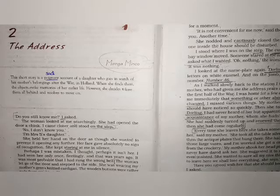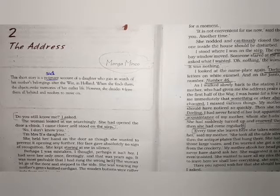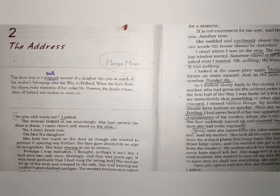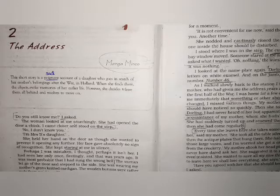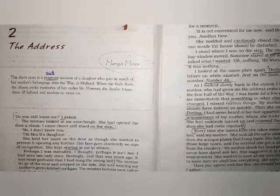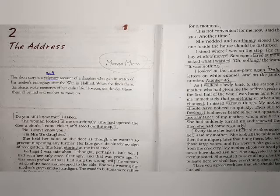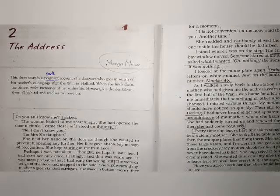In this series we are studying chapter 2 of our Snapshots book, that is 'The Address.' In previous videos we have studied a bit about the address, on which the narrator goes just to get the belongings of her mother that Mrs. Darling has taken. Her address was number 46, where Mrs. Darling was. That was the main address on which the whole chapter is based.